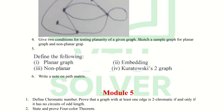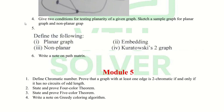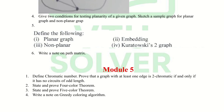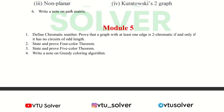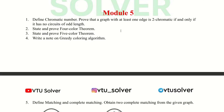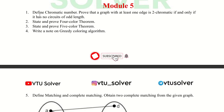The fifth question is: define the following — planar graph, embedding, non-planar graph, and Kuratowski's two graphs. The sixth question is: write a note on the path matrix.